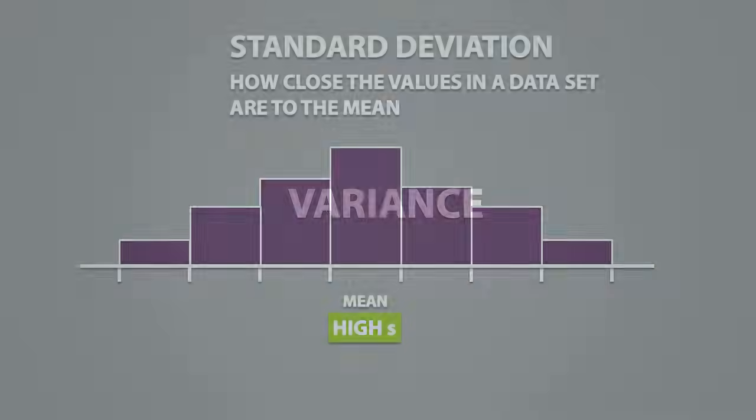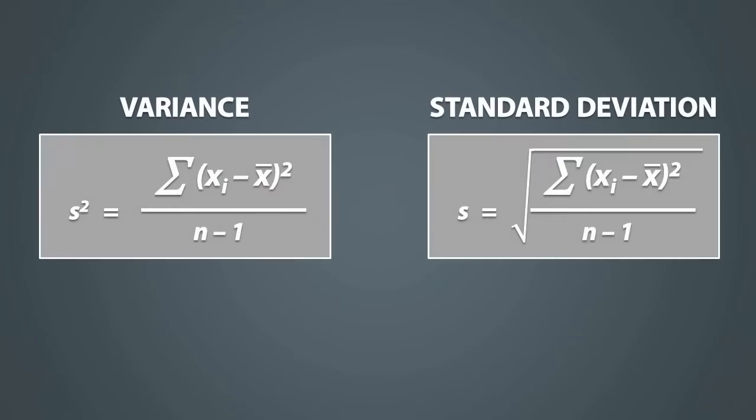The last thing we will talk about is variance. Variance is closely related to the standard deviation. The only difference between these two formulas is that the standard deviation involves taking the square root of the calculations, and for the variance, we don't take the square root.